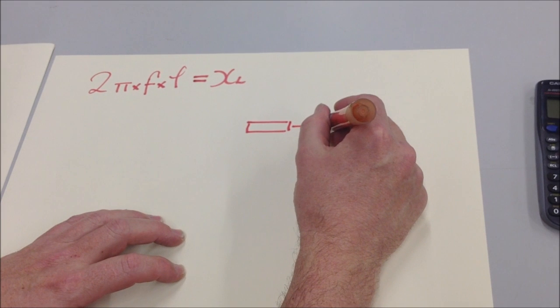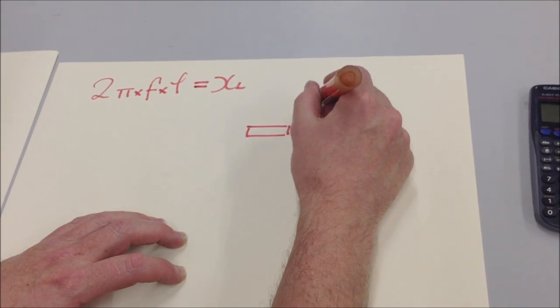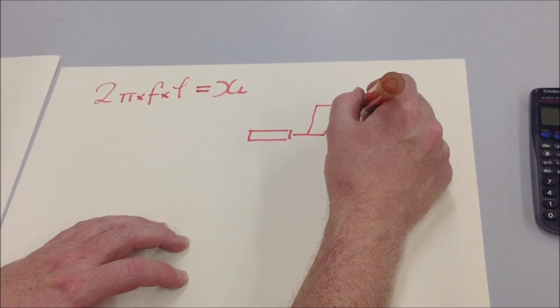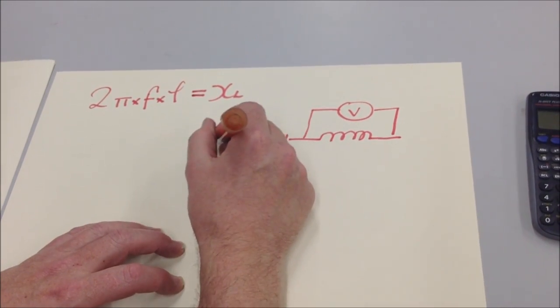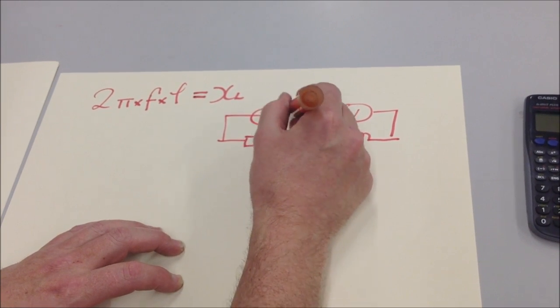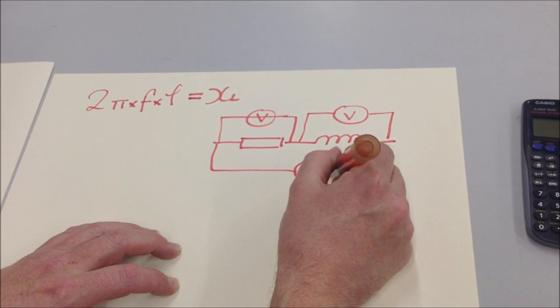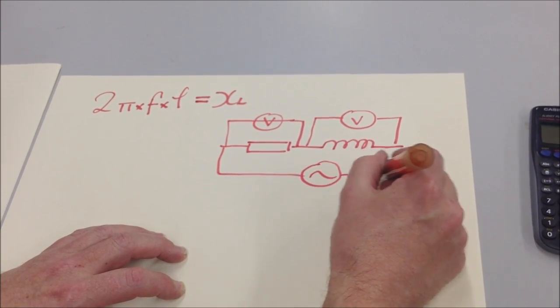We've got a resistor with the inductor coil, and measuring the voltage across both components we've got two multimeters both set to measure AC voltage. That is all connected up to a function generator which gives the sine wave output.